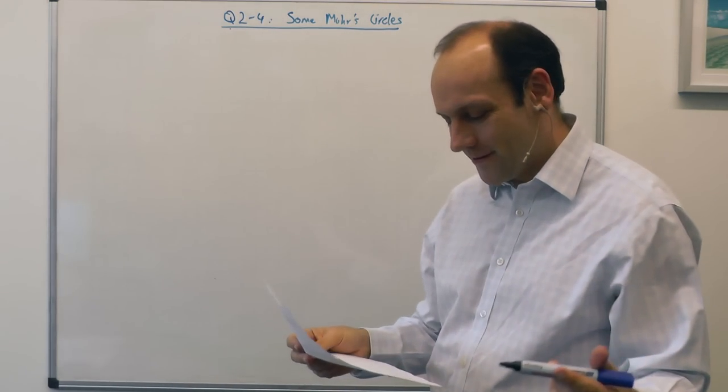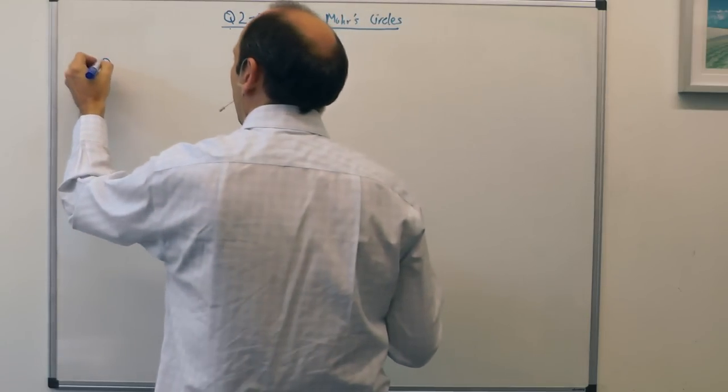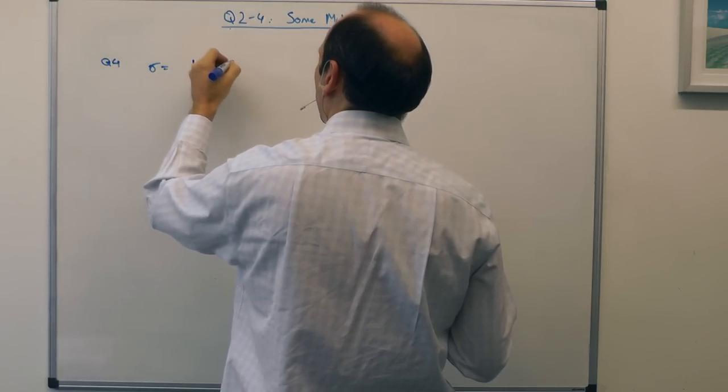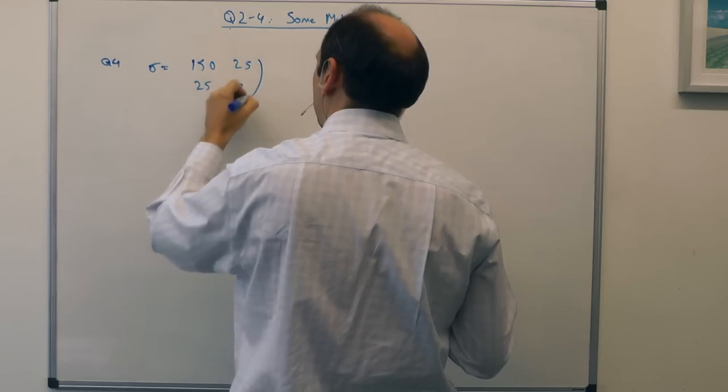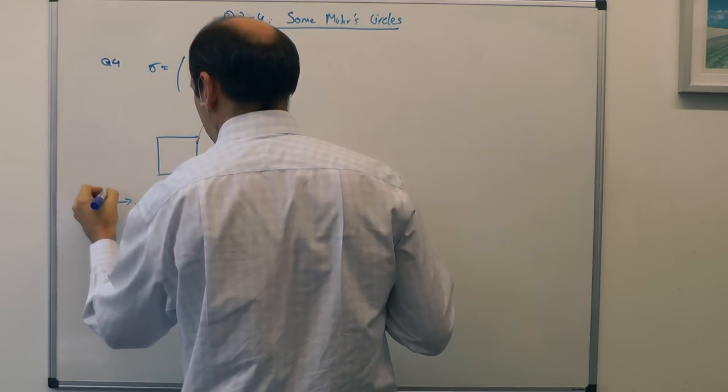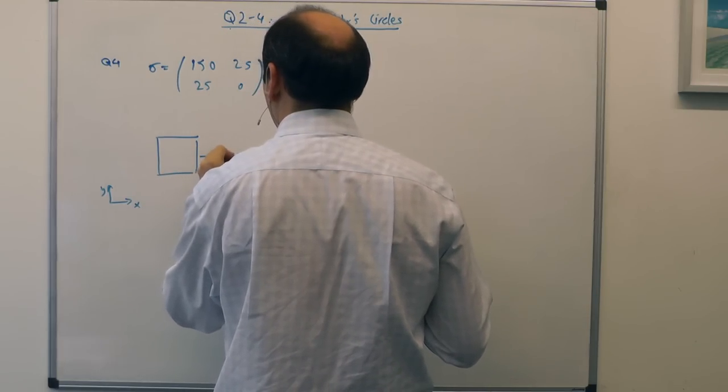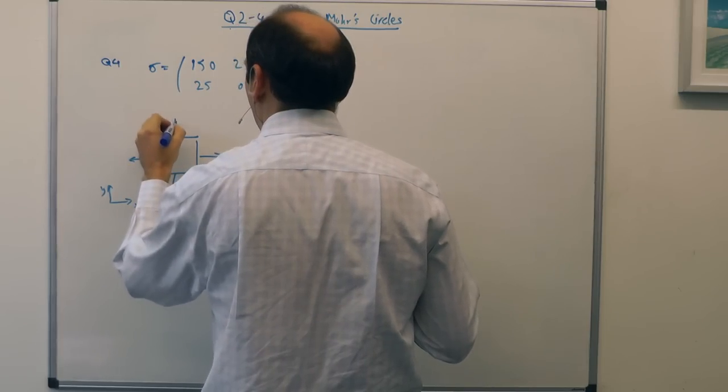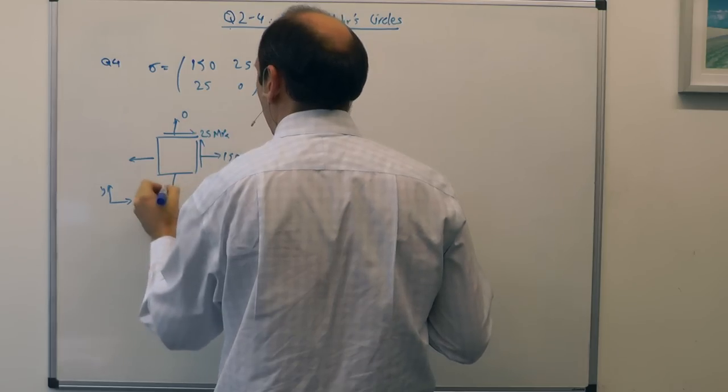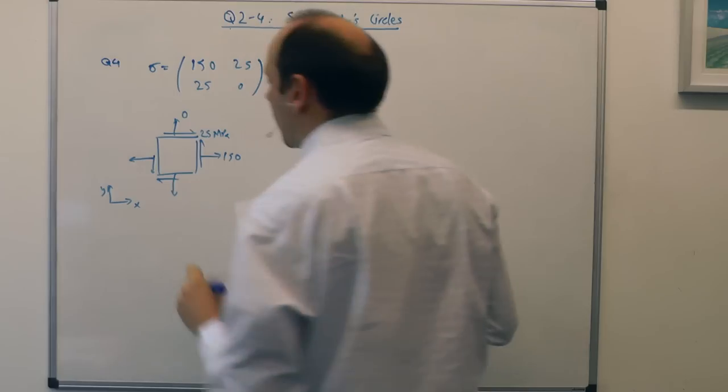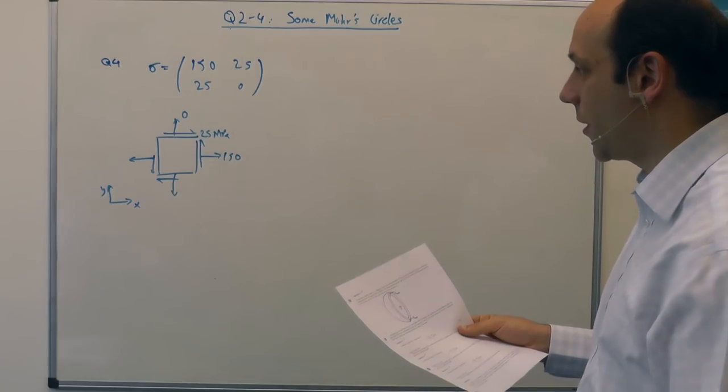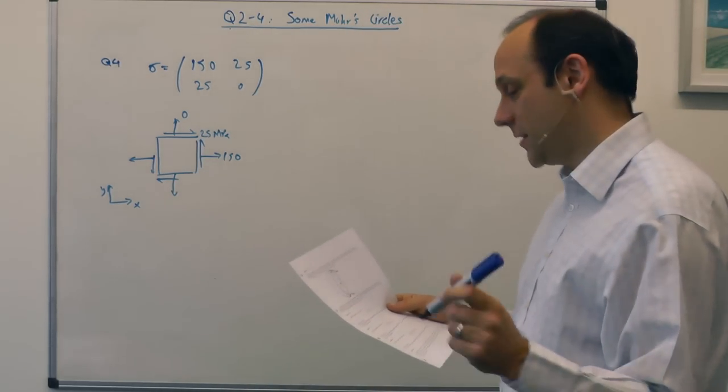So now, finally, question 4. Here, we have a stress state of, a bit more complicated, 150, 25, 25, 0. So I'll draw my little elemental cube again. There's x, there's y, 150, 0, 25 MPa. There's my little elemental cube. The question asks, what are the principal stresses? And what angle to the x-axis are the principal stresses found?